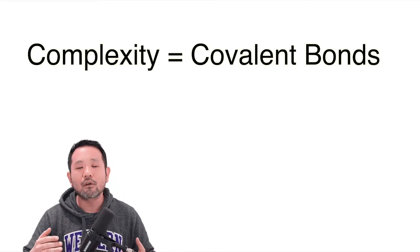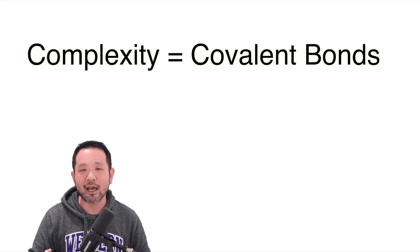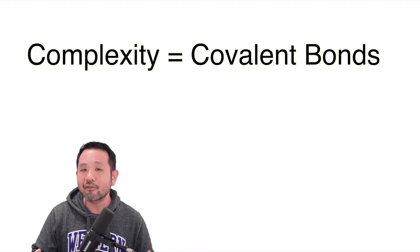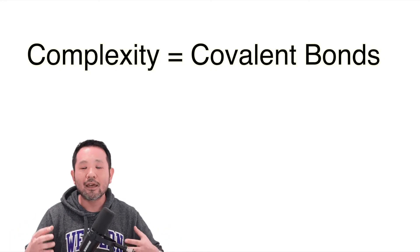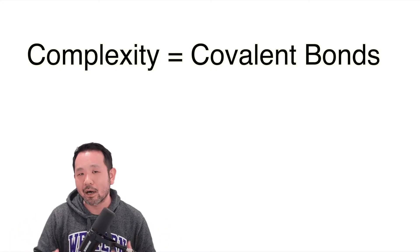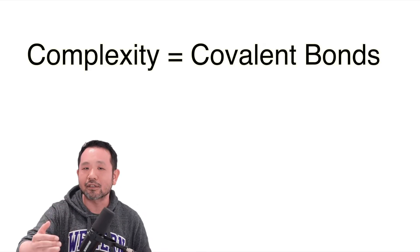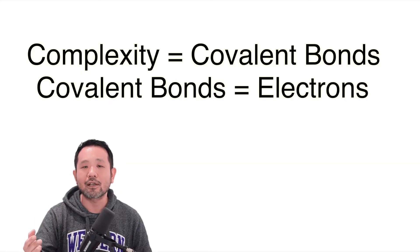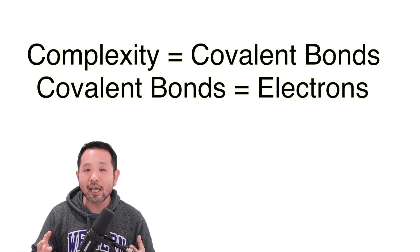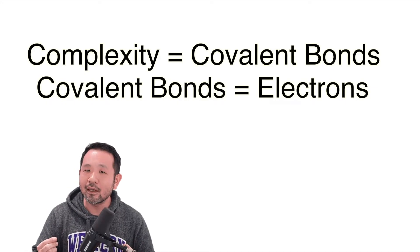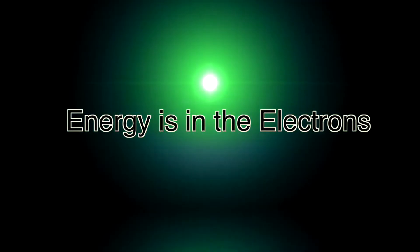We can investigate one step further and talk about what makes that complexity. What creates complexity in the glucose molecule are the covalent bonds that are holding that glucose molecule together. The more bonds you have, the more atoms are connected together, creating that complexity and reducing the entropy of that molecule. Furthermore, these covalent bonds are made from the sharing of electrons, so the energy of glucose is perhaps held within those highly energetic electrons holding glucose together.